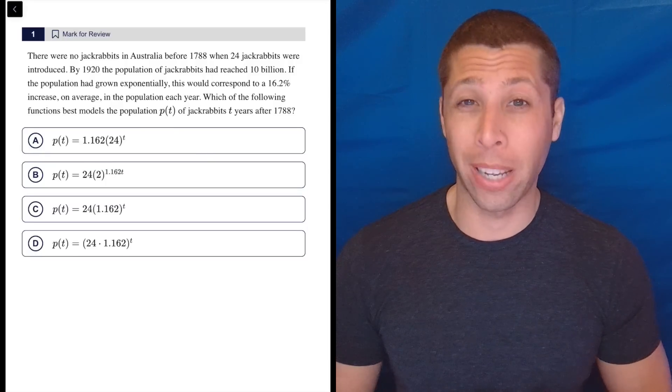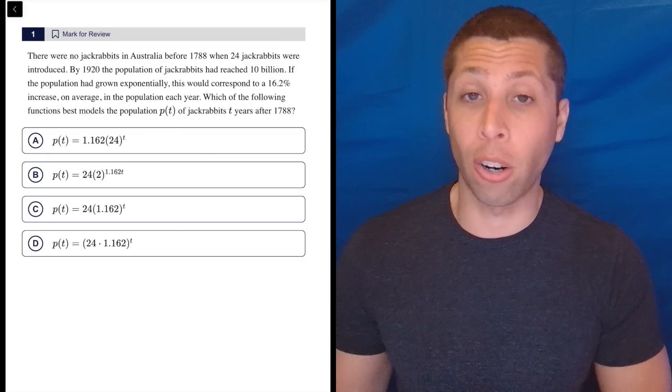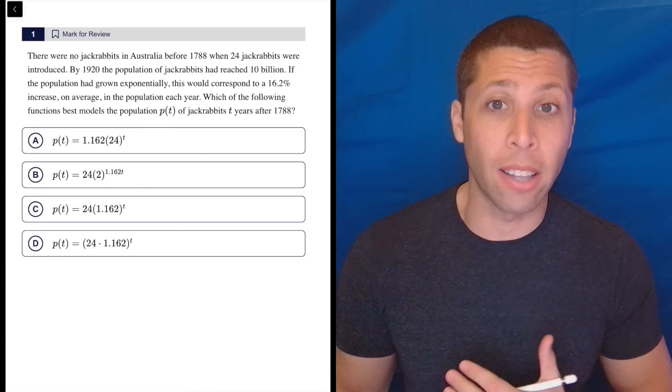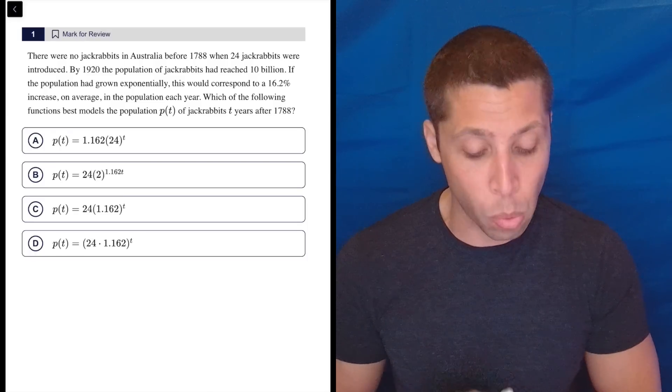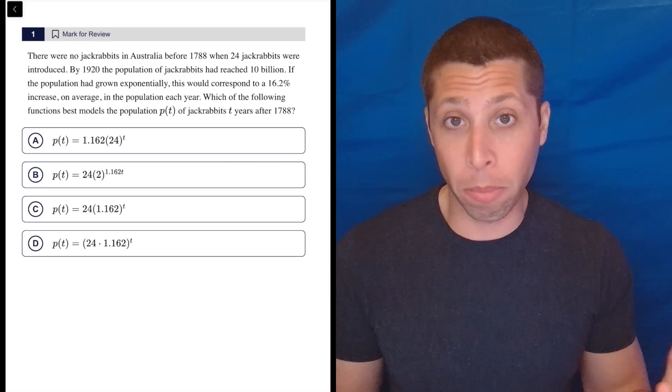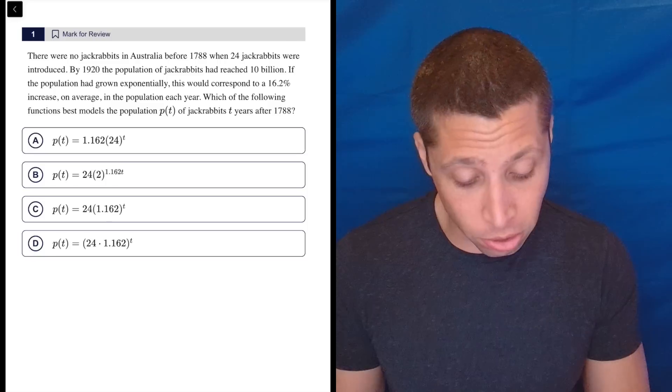The SAT considers exponential equations to be inherently harder than a lot of other things you're going to see, like lines and quadratics. So even something as basic as this, they're going to label as a medium difficulty question. But if we know the formula, we don't even need to show any work here. Let's just read the story.